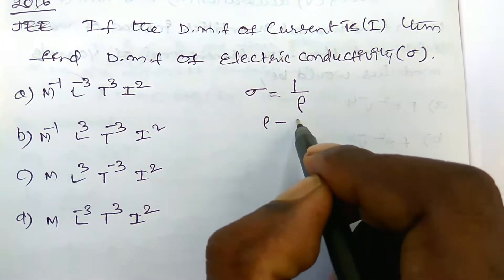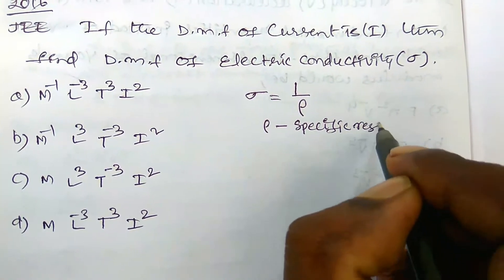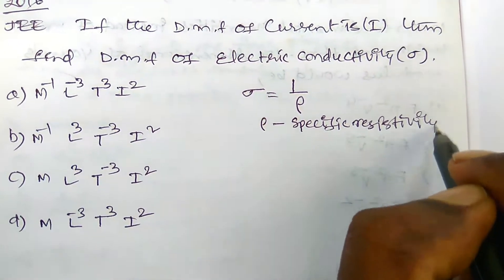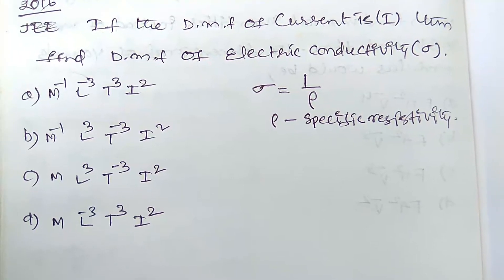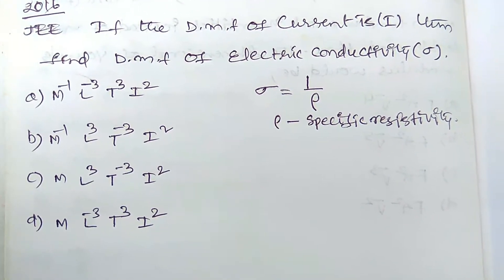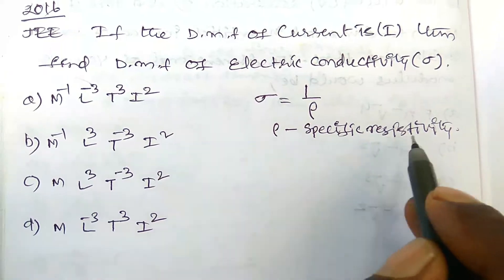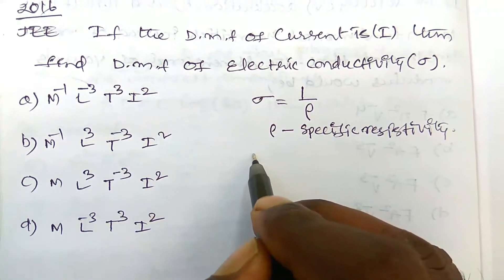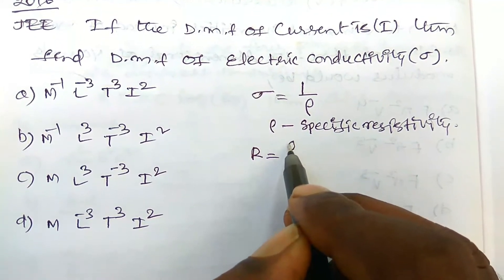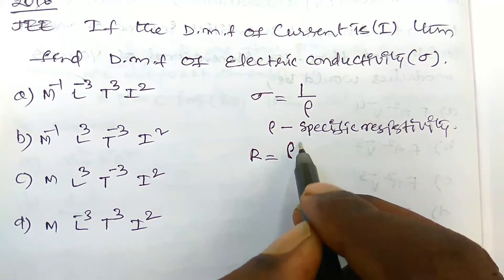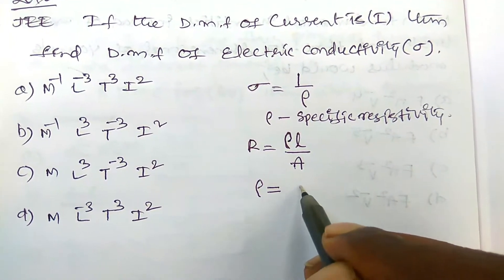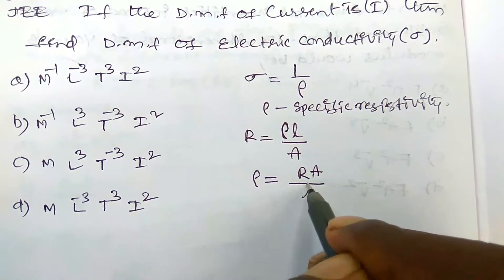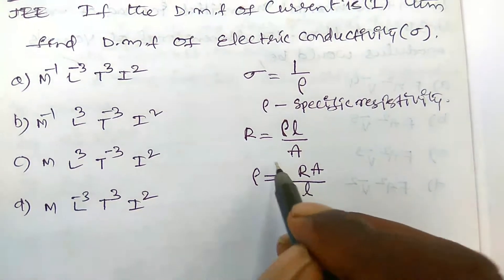The 2016 JEE question: if the dimensional formula of current is given as i (we should not use any standard dimension for current; they give us only i), then find the dimensional formula of electrical conductivity, denoted by sigma. We have to derive the dimension formula of electrical conductivity in terms of i.